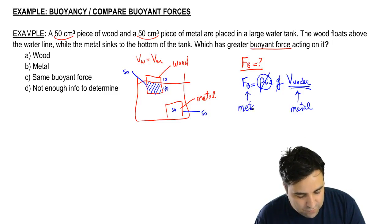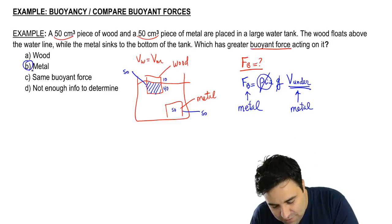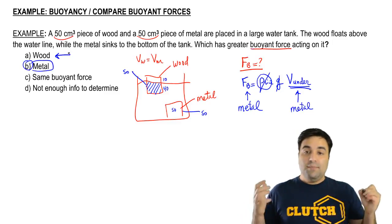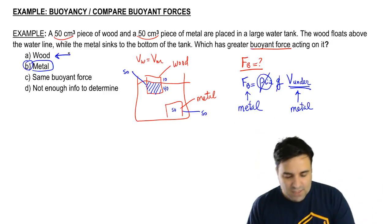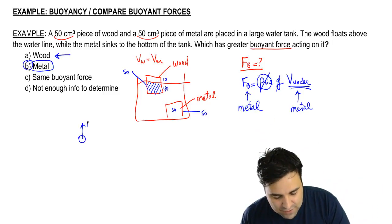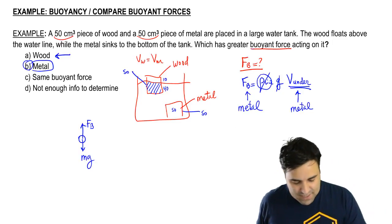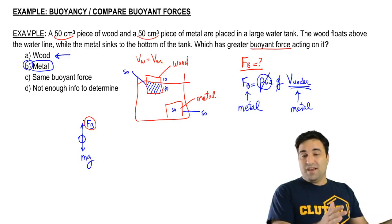Therefore, the stronger buoyant force will be metal. Hopefully you got this right. But a lot of people incorrectly pick wood because they think it's floating, so it must be that the force pushing it up is stronger than the other one.